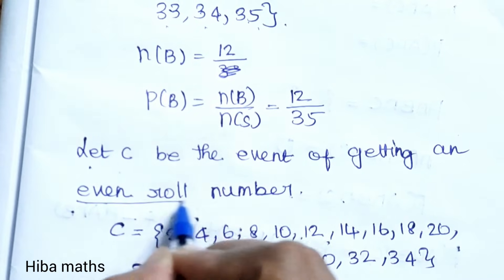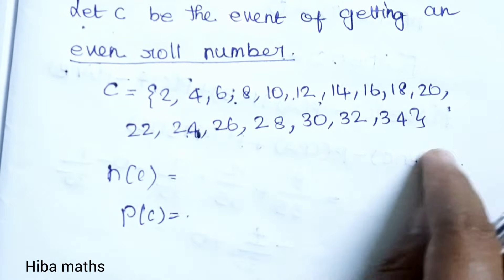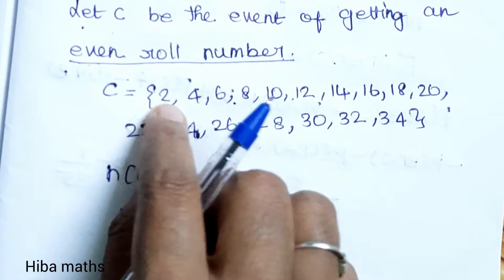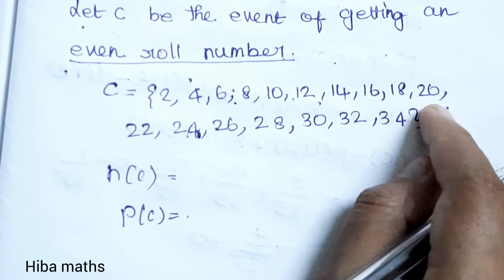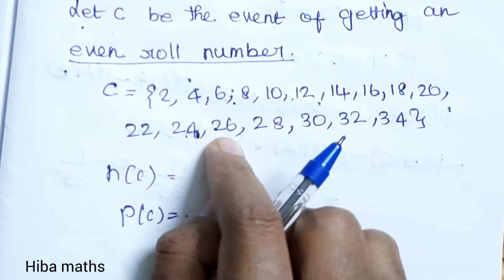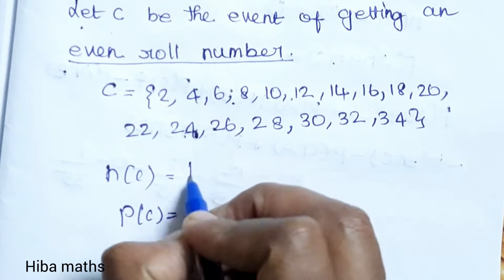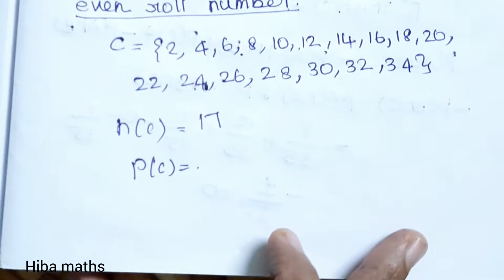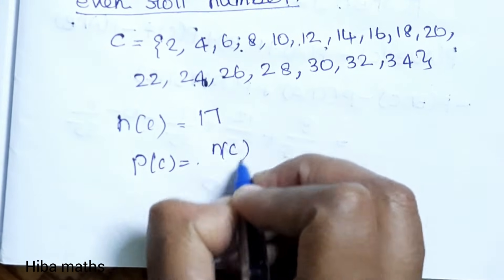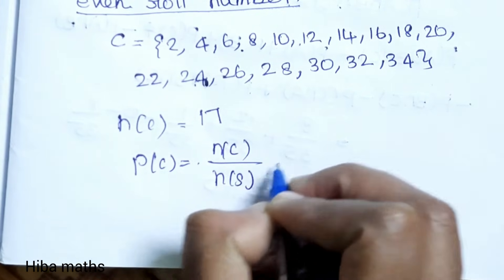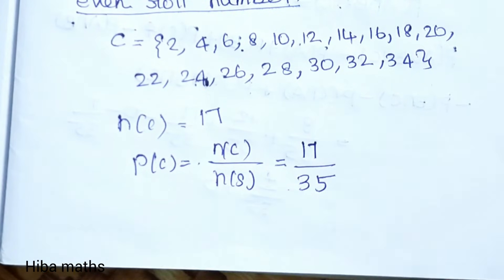Let C be the event of getting an even roll number. Even numbers from 1 to 35 are: 2, 4, 6, 8, 10, 12, 14, 16, 18, 20, 22, 24, 26, 28, 30, 32, 34. Total: 17 even numbers. So P(C) = n(C) / n(S) = 17/35.